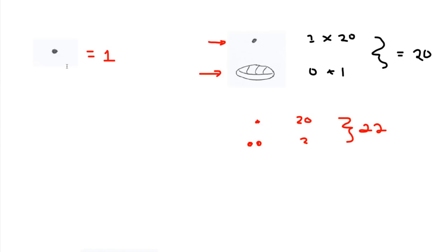This is a symbol for one. And then if I put below it this symbol — sometimes described as a shell, other places described as an eye — I'll call it a shell, which is the zero symbol, it's in the bottom row here. It's holding a place for the ones. This one is in the place for the twenties, and I have a one in the twenty place. So this whole group represents twenty.